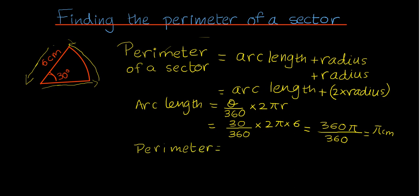Right, now in order to find the perimeter, I'm going to take my arc length and add it to 2 times the radius. And the reason it's 2 times the radius is because there are two radii here—one down here and one up there. So the arc length is π centimeters plus 2 times the radius, which is 6 centimeters. So that is equal to π plus 12 centimeters.